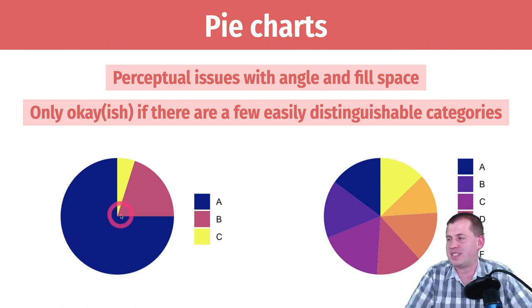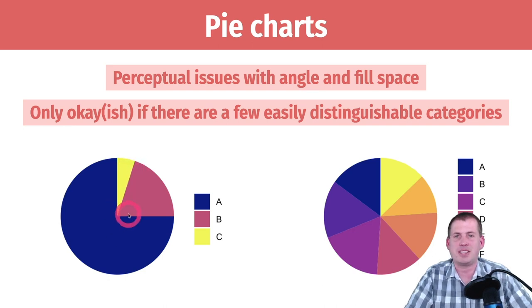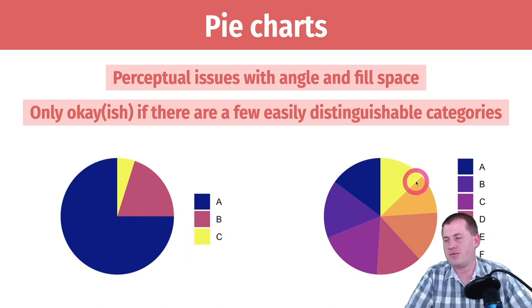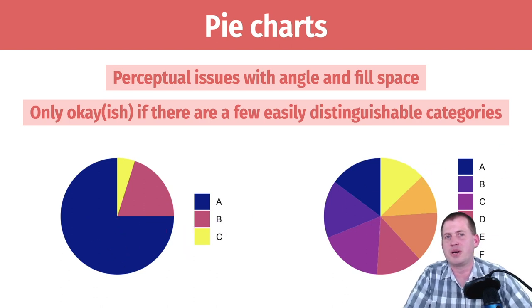And even if you have something like this, a bar chart would still show the differences in magnitude between these different levels more than this pie chart would. So generally avoid pie charts.